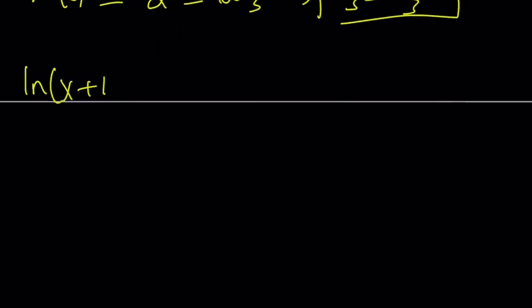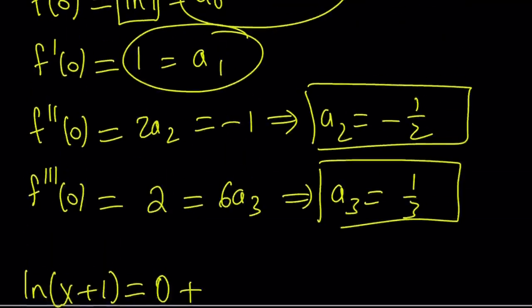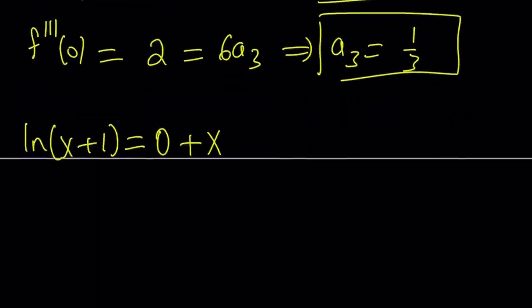ln(x+1), which is also f(x), can now be written as: a₀ is 0, and then a₁x. Remember, a₁ is 1, so it's just x. Then you get x²/2, and then x³/3. Then minus x⁴/4, x⁵/5, and so on. It's just going to go on forever.